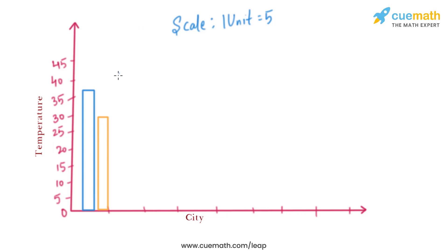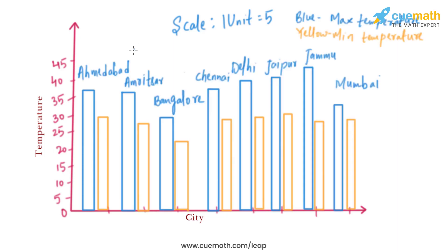We start drawing the bar graph with the first city, Ahmedabad. The maximum temperature is 38 degrees Celsius, so it will lie between 35 and 40. The minimum temperature was 29 degrees Celsius, so it will lie between 25 and 30. Similarly, we will draw the bar graph for the other cities as well.